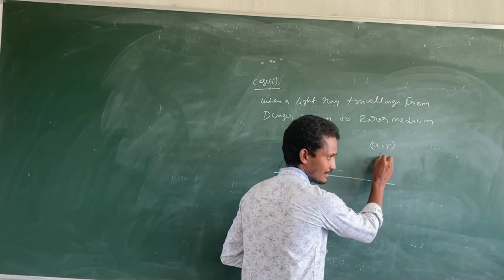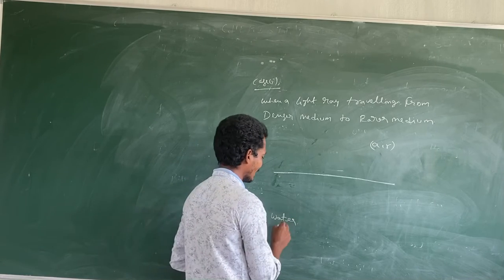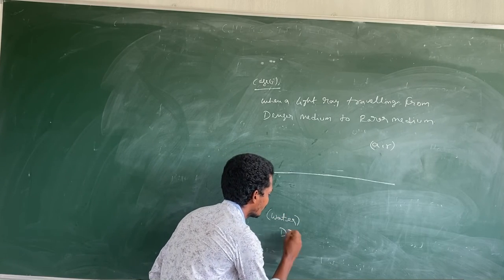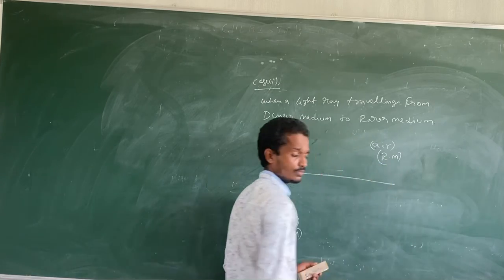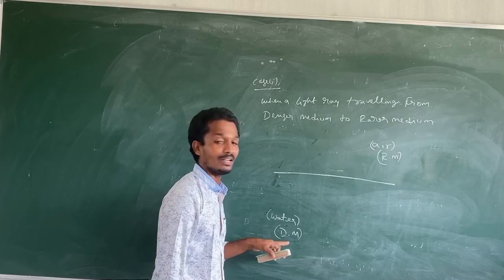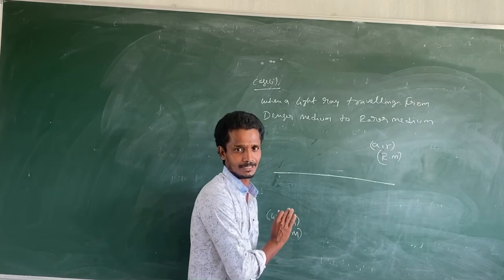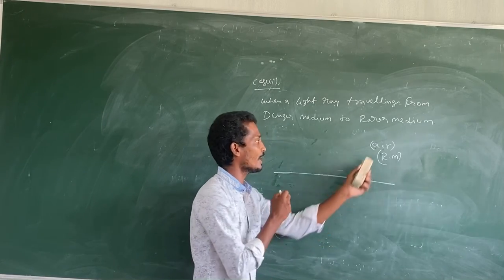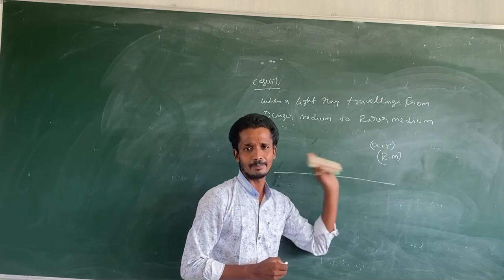Air has the less density when compared to water. That's why water is the denser medium and air is the rarer medium. The water density is high when compared to air. That's why water is the denser medium and air is the rarer medium.